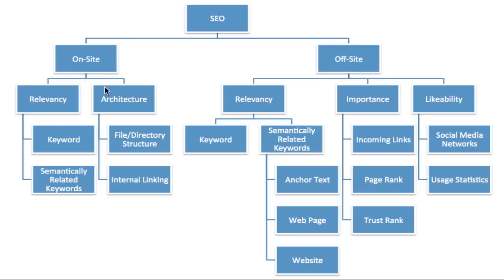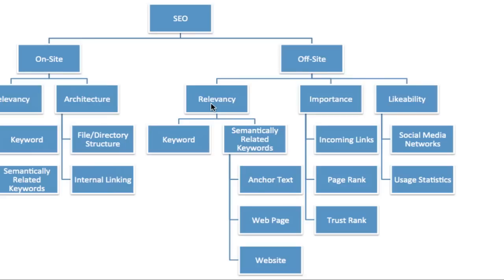Off-site SEO can be broken down into three subcategories: relevancy, importance, and likability. Relevancy is broken down to the keyword level and semantically related key terms. When it comes to relevancy, most people think about getting the backlink anchor text right, but we're actually looking for relevancy on the web page that the link is originating from and the website as a whole. We want to make sure we're getting good links with good anchor text from relevant pages and relevant domains.